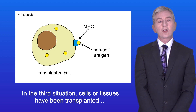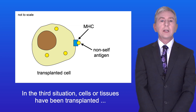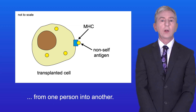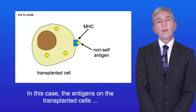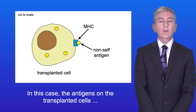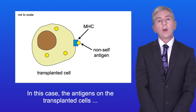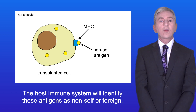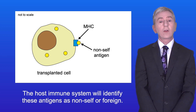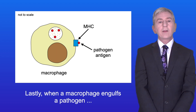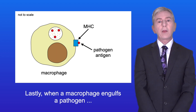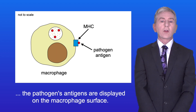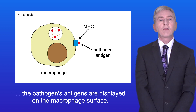In the third situation, cells or tissues have been transplanted from one person into another. In this case, the antigens on the transplanted cells will not be identical to the antigens on host cells. The host immune system will identify these antigens as non-self or foreign.